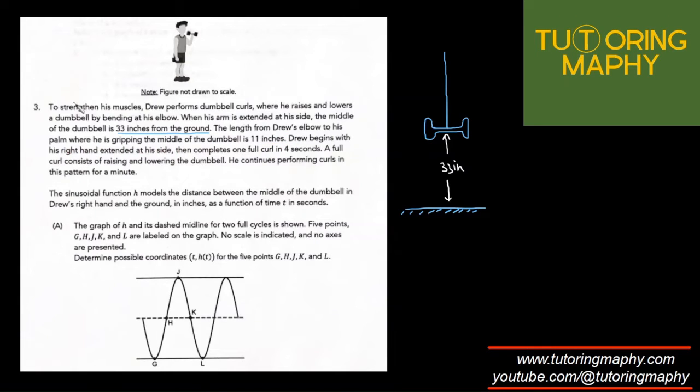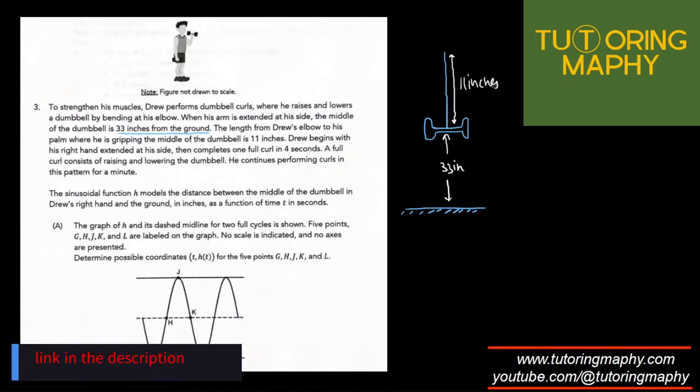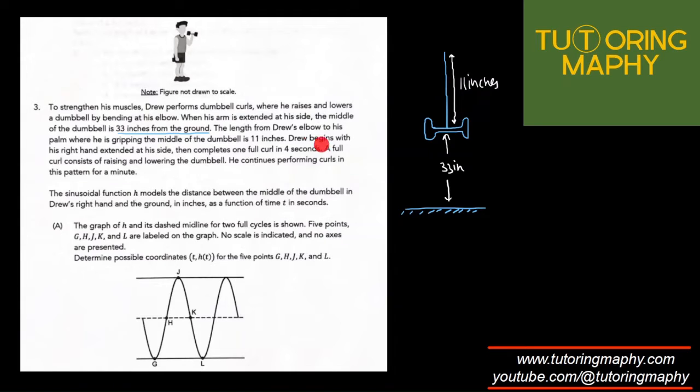The length from Drew's elbow to his palm where he's gripping the middle of the dumbbell is 11 inches. Drew begins with his right hand extended, then completes one full curl in four seconds. A full curl consists of raising and lowering the dumbbell.